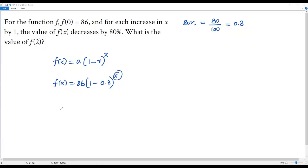On the right side I have to plug in x equals 2, getting 86 times (1 - 0.8) to the power 2. So f(2) equals 86 times, when I simplify 1 minus 0.8, it will be 0.2 to the power of 2.